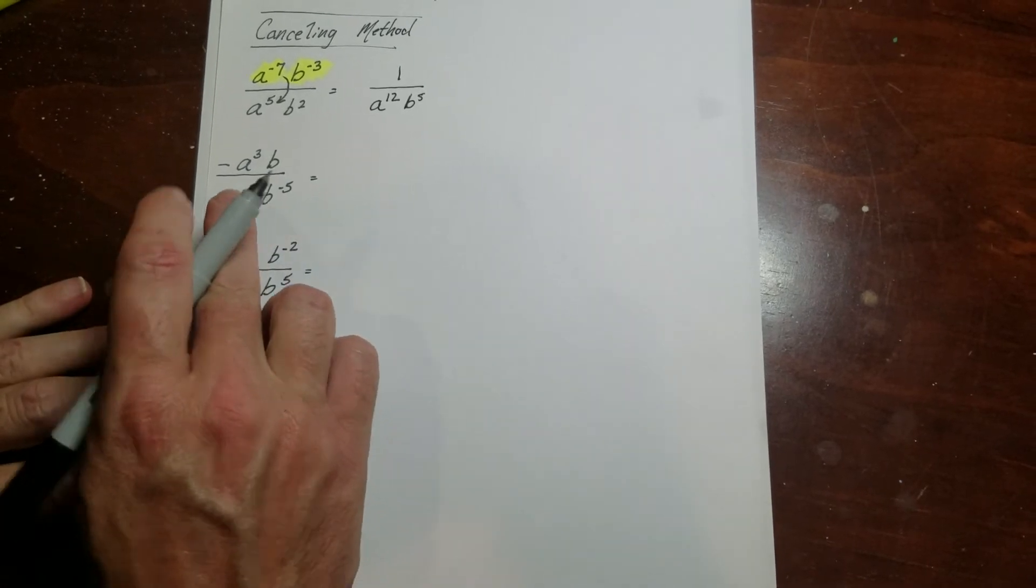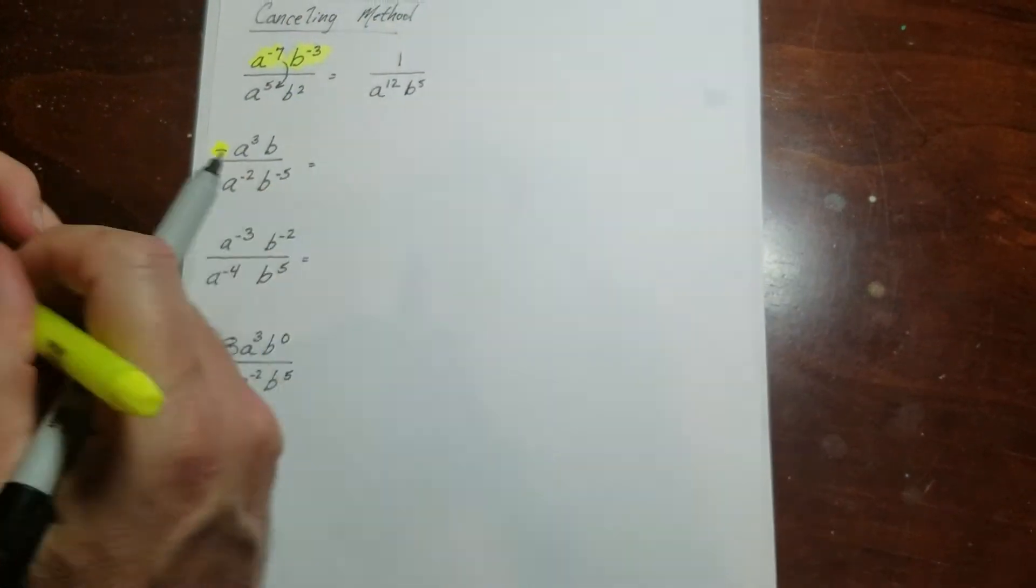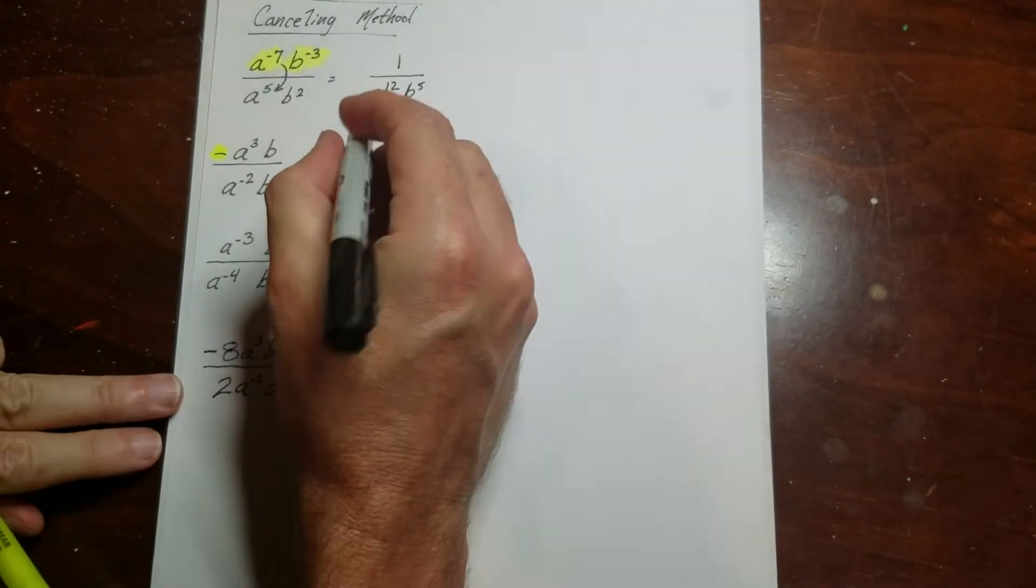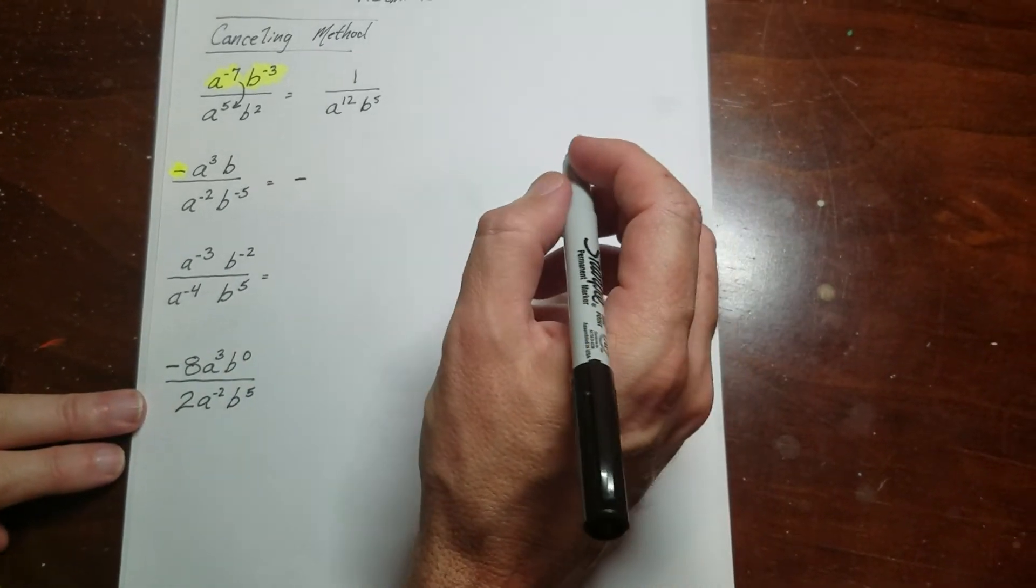This one right here, there's a negative symbol outside right here. What does that influence? Well, what it influences is my answer is going to be negative. That's it. That's all that's going to happen here.